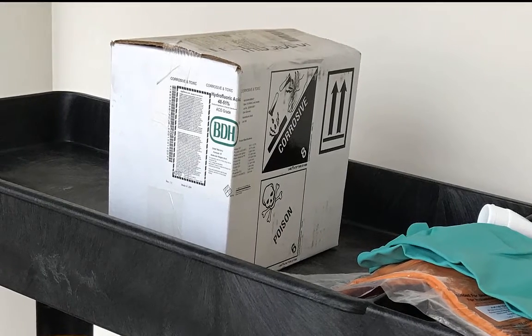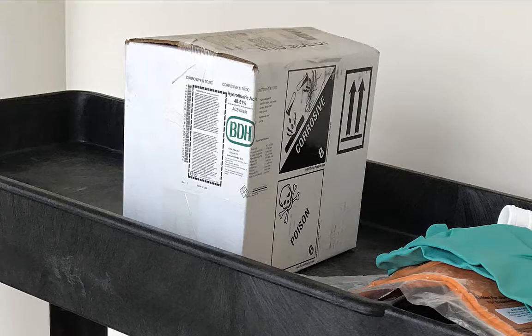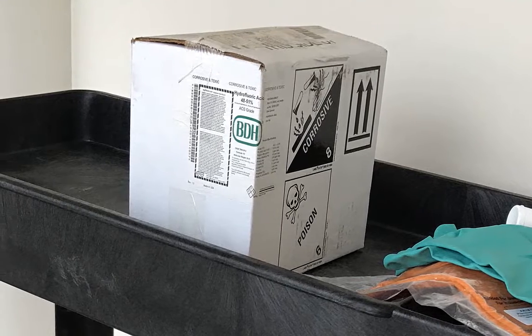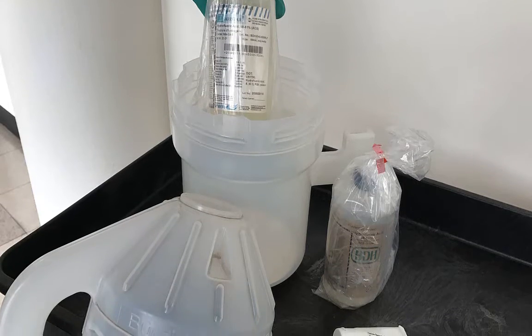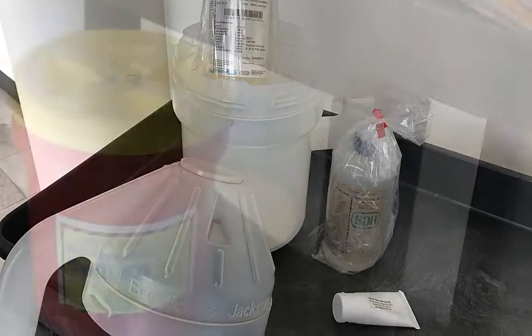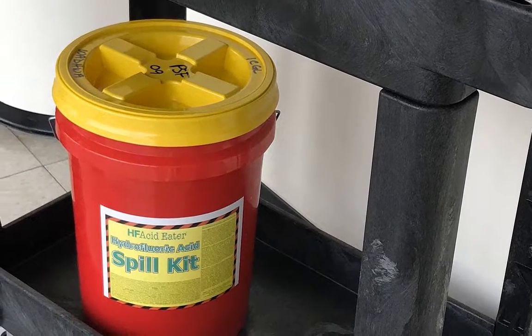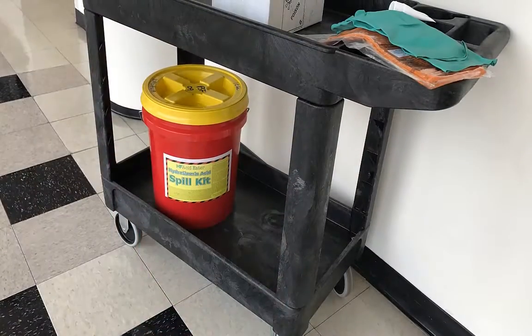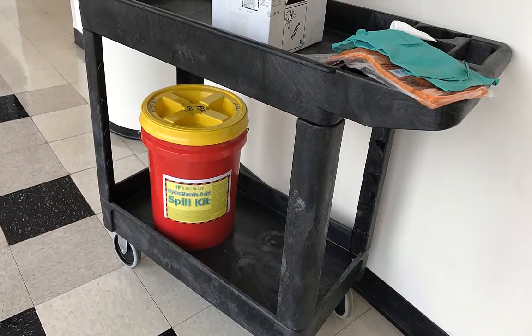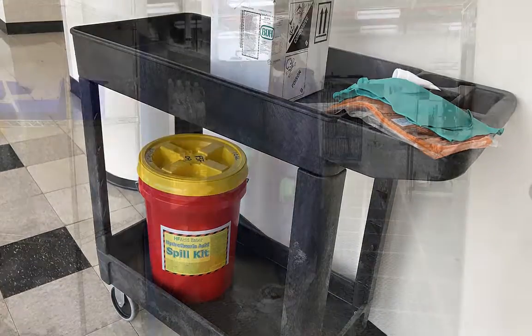When transporting HF, it is preferred that the unopened container remains in the manufacturer shipping box. If you must transport an already open container of HF, use a standard acid carrier or a cart with a lip on all sides. Bring the appropriate absorbent spill kit materials, a tube of antidote, and PPE with you during transport, as well as a buddy whenever possible. If transporting small quantities in a sealed container short distances within your lab, ensure no trip hazards are present.